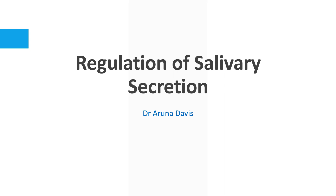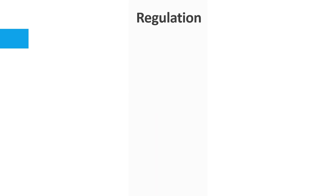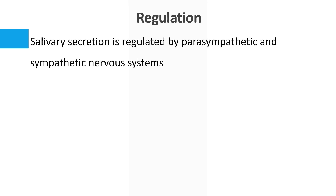In this video we are going to quickly discuss the regulation of salivary secretion. What makes it different from other secretions of the gastrointestinal tract is that it is mainly neural. When we learn about gastrointestinal secretions, we learn that they are regulated by both neural and hormonal mechanisms, but in the case of salivary secretion it is mainly neural — specifically by the sympathetic and parasympathetic nervous system.